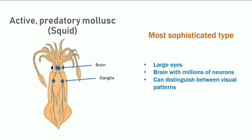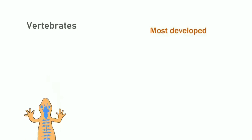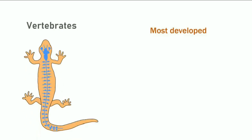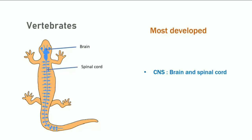In vertebrates, the brain is the most developed part. The nervous system is divided into the central nervous system, composed of the brain and spinal cord, and the peripheral nervous system, composed of nerves and ganglia, including sensory ganglia.